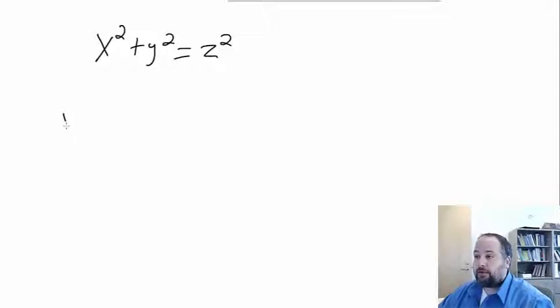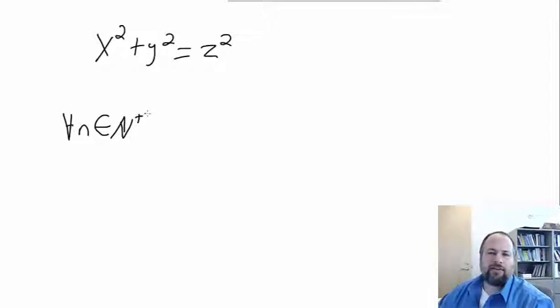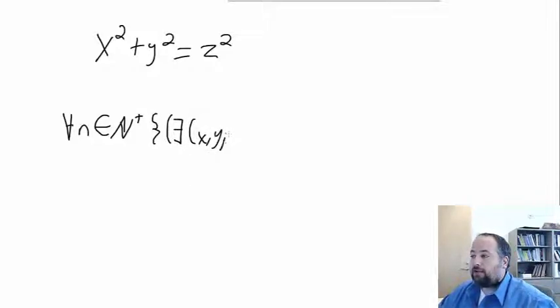Well, we would say that for all n that are members of the set of natural numbers, positive natural numbers—we don't need to worry about zero here—there exists an x, a y, and a z, which are also members of the set of positive natural numbers,